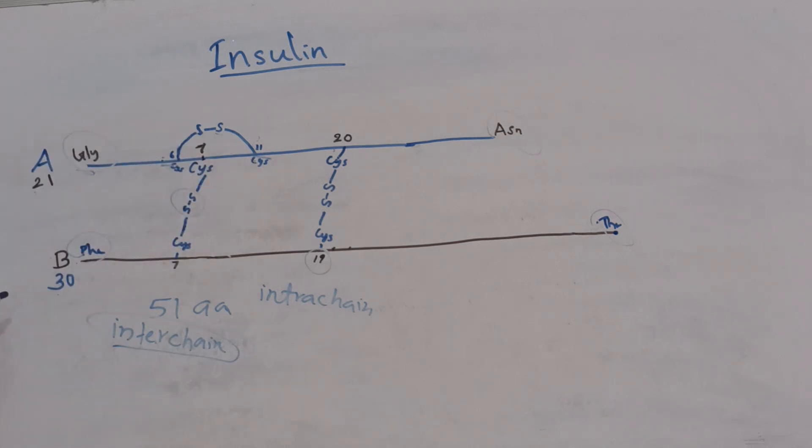So, what is the importance of these disulfide bonds? Breaking these disulfide bonds with alkali or reducing agents inactivates insulin. That is the importance of disulfide bonds.